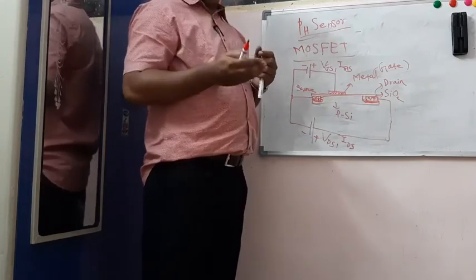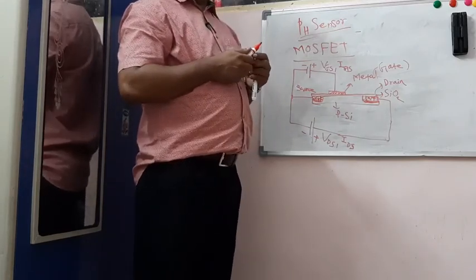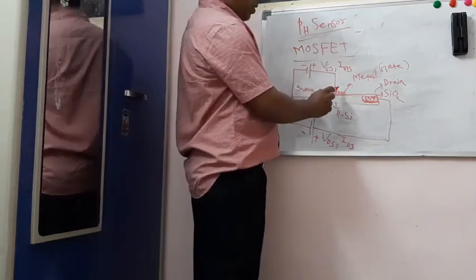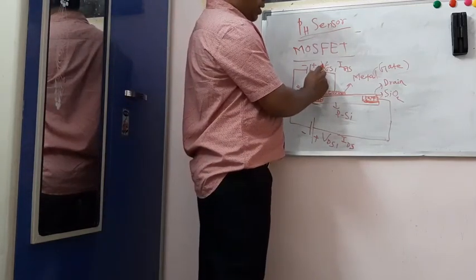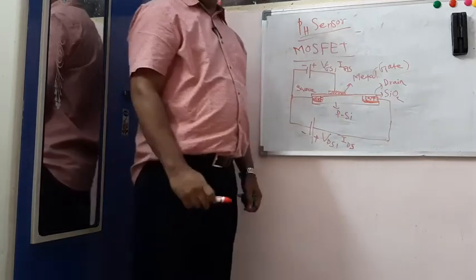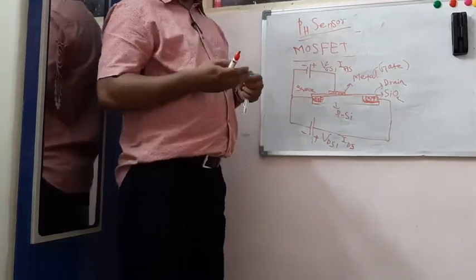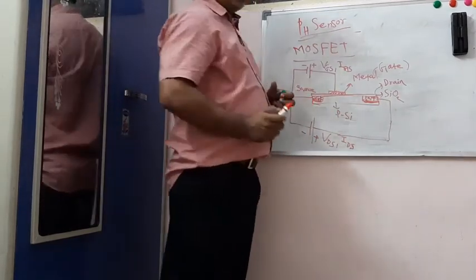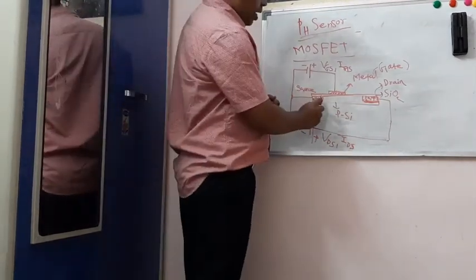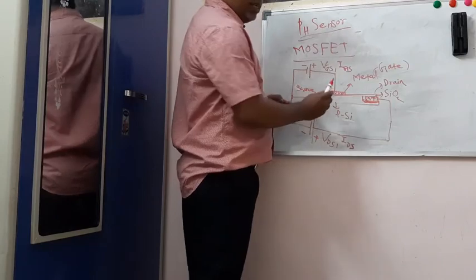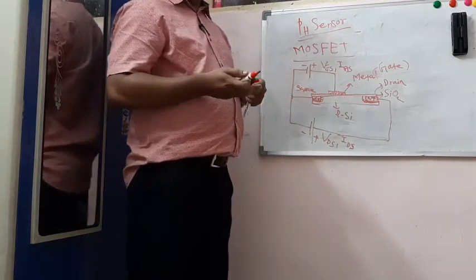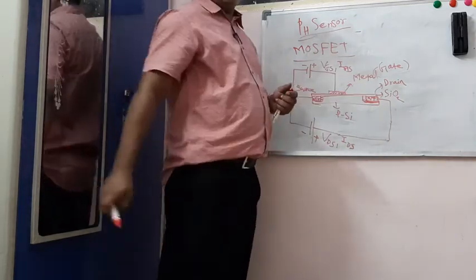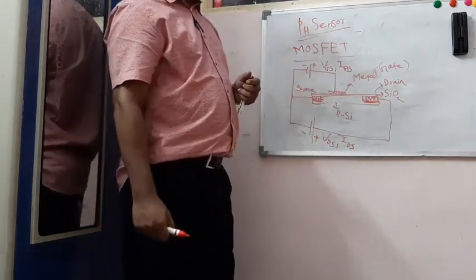So in order to overcome the depletion region or weaken the depletion region, you need to give potential Vgs. So by gradually increasing potential between gate to source, this channel, that is the depletion region, will be decreasing and finally it will pinch off and so maximum current flows between source to drain.